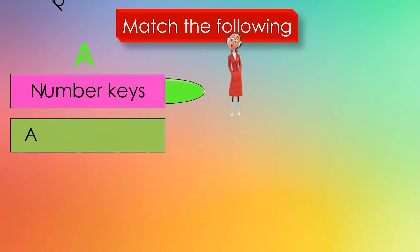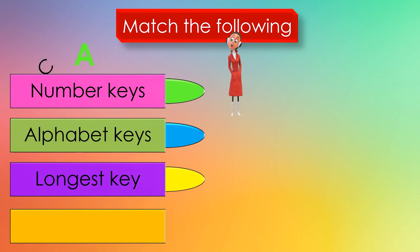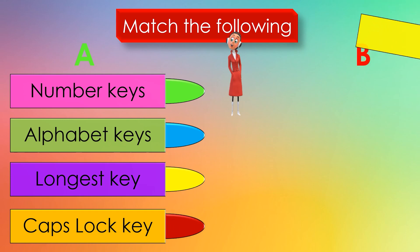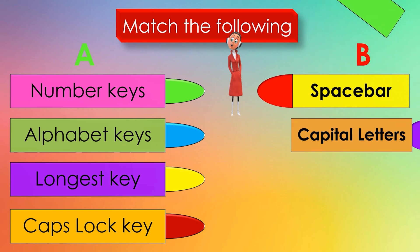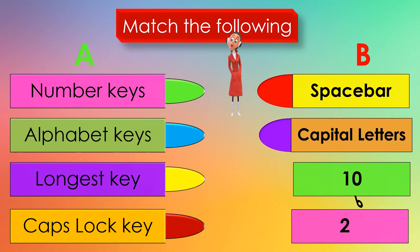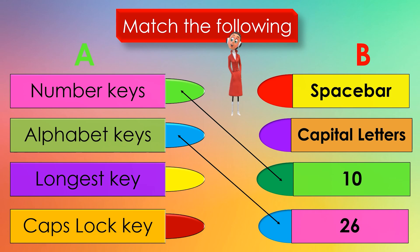Match the following. Table A: Number Keys, Alphabet Keys, Longest Key, Caps Lock Key. Table B: Spacebar, Capital Letters, 10, 26. Watch closely as I match the keys to the correct type — Number Keys: 10, Alphabet Keys: 26, Longest Key: Spacebar, Caps Lock Key: Capital Letters.